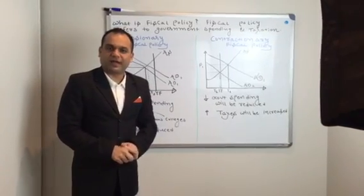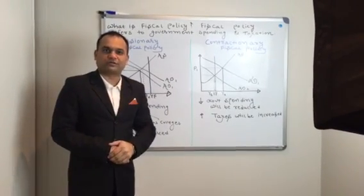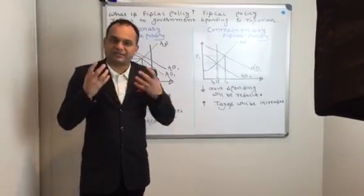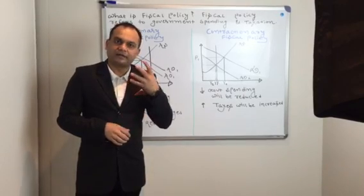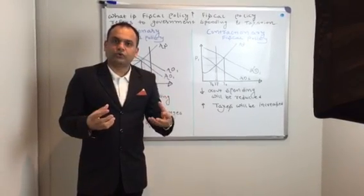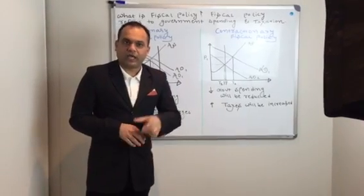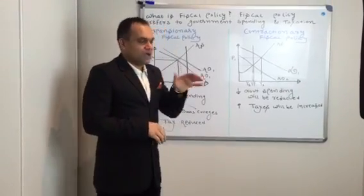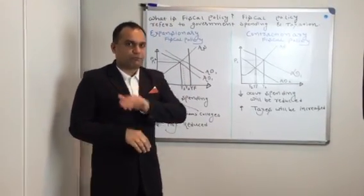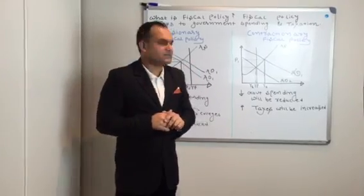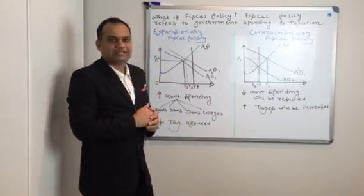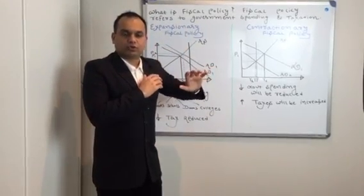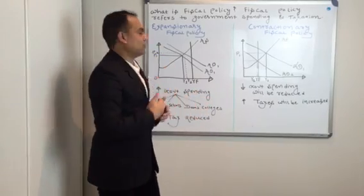Hi guys, my name is Chirayubhatt and we are going to start our economics lectures from today. We are going to study fiscal policy today. Basically, a central government and central bank of a nation resort to two policies in order to fix and keep the economy on track: one is fiscal policy and the other one is monetary policy. We are going to see fiscal policy today. There are two kinds of fiscal policies: expansionary fiscal policy and contractionary fiscal policy. To know both policies, first we need to understand what fiscal policy is.